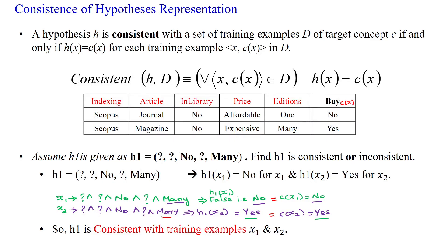Hello everyone. Here we will see the example of whether a given hypothesis is consistent or not. We will take the given statement: a hypothesis H is consistent with a set of training examples given in dataset of target concept C, if and only if, whenever H of X is equivalent to C of X for each and every training example H of X and its corresponding C of X in dataset D.